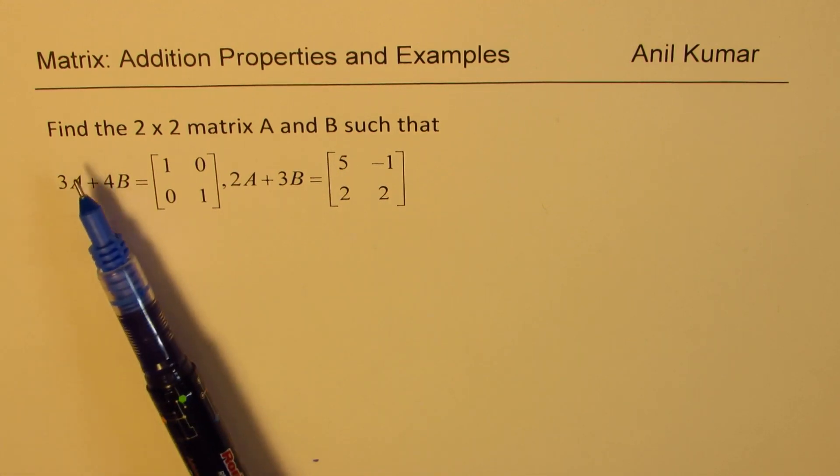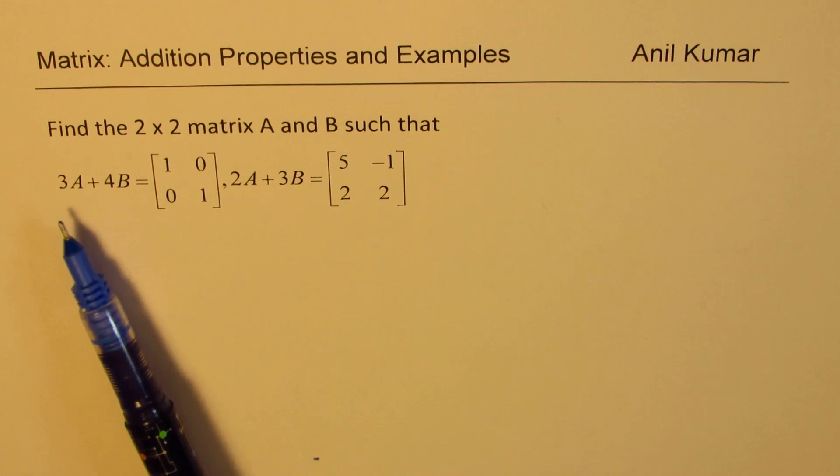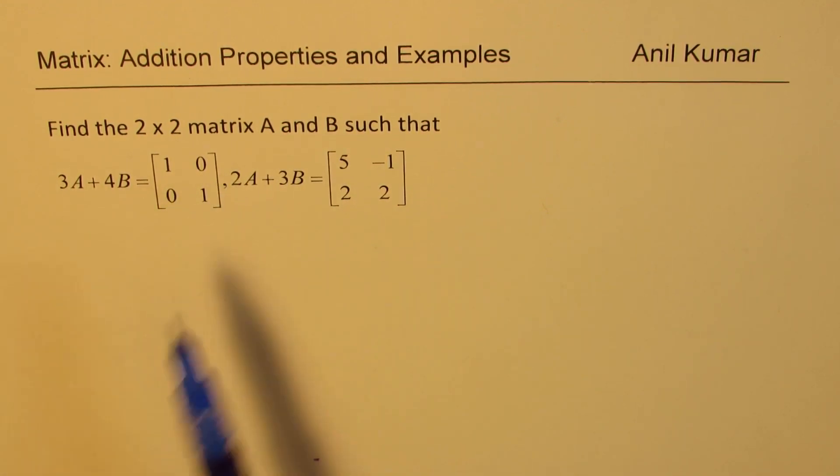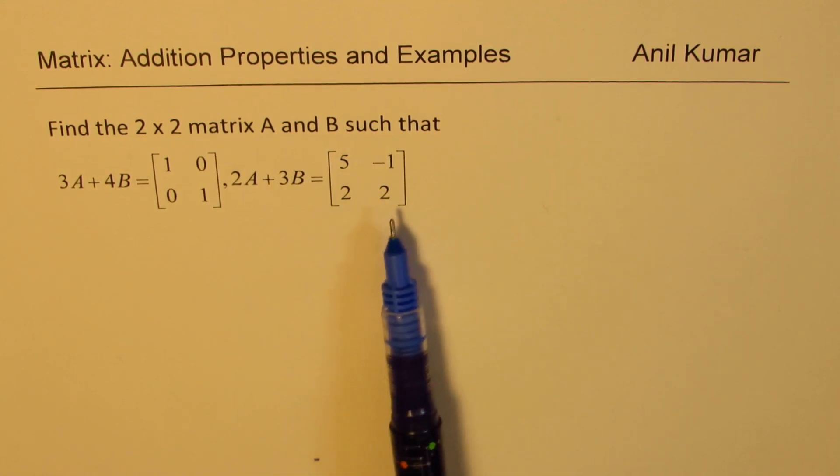The question here is find the 2 by 2 matrix A and B such that 3A plus 4B equals [1 0; 0 1] and 2A plus 3B equals [5 -1; 2 2].